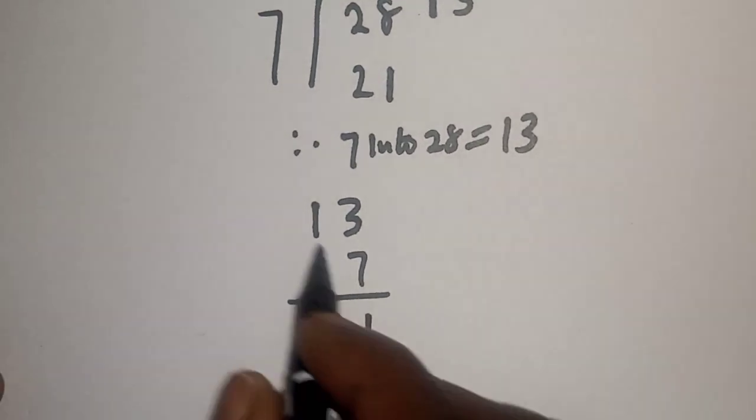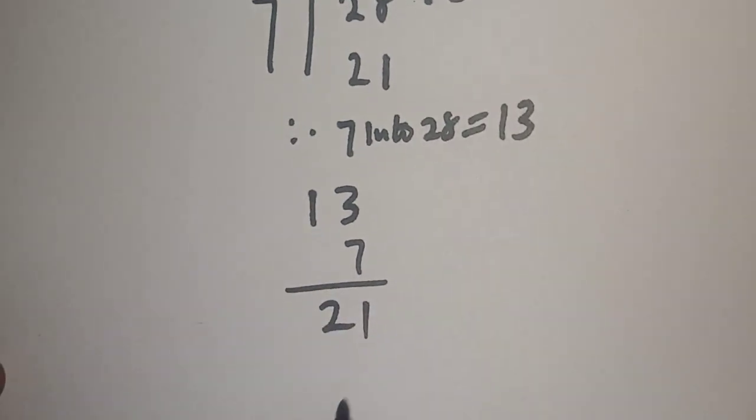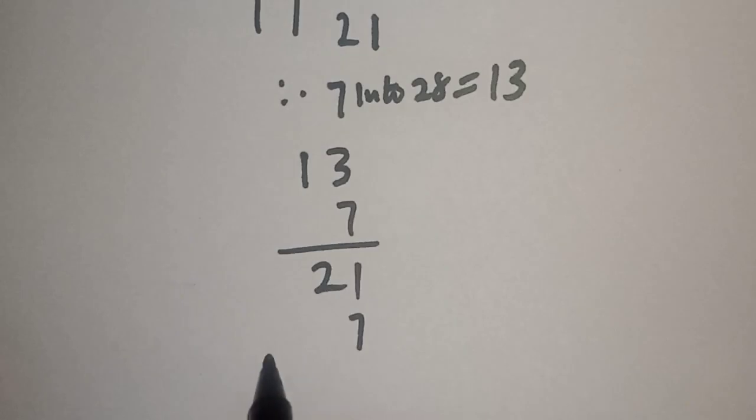21, and 7 times 1 is 7. If you add everything together, 7 plus 1, this is 8, and 2.